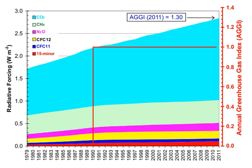Human activities since the beginning of the Industrial Revolution have produced a 45% increase in the atmospheric concentration of carbon dioxide, CO2, from 280 ppm in 1750 to 406 ppm in early 2017.